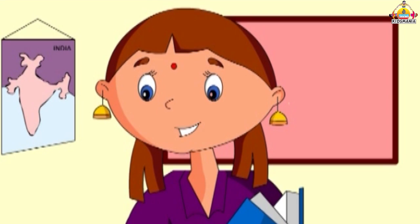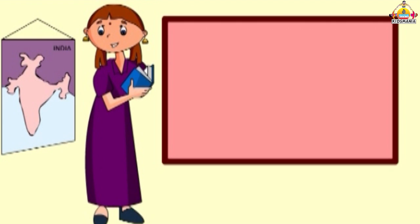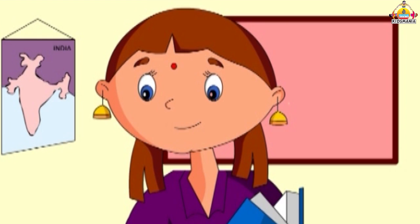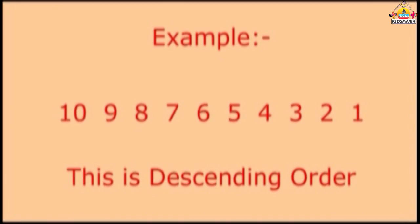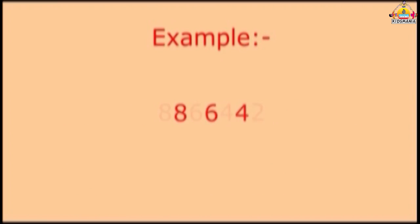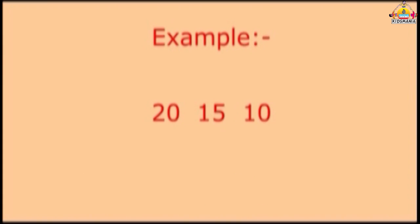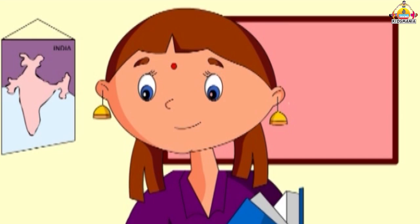As we have learnt ascending order, we now learn descending order also. Descending order means writing the numbers from big to small. For example, 10, 9, 8, 7, 6, 5, 4, 3, 2, 1. This is descending order. 8, 6, 4, 2, 9, 6, 3, 20, 50, 10, 5. These are all in descending order.